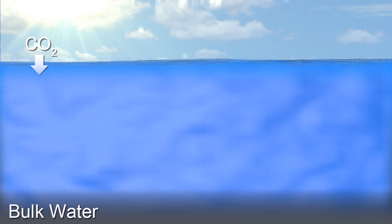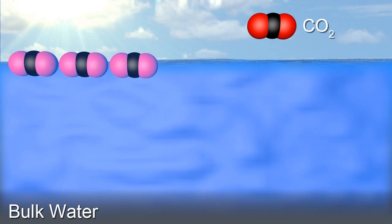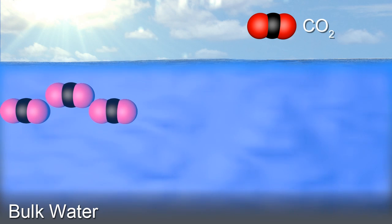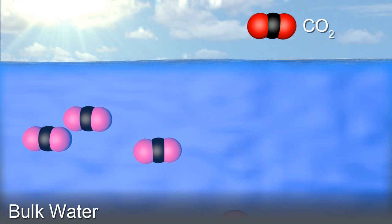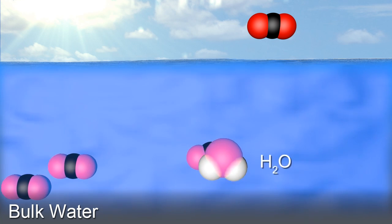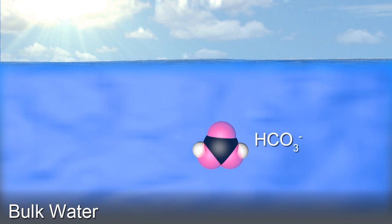If we look at this very thin surface layer, the CO2 molecules hit the surface and are slowed down due to laminar flow effects. Most of them react with water molecules and create bicarbonate.